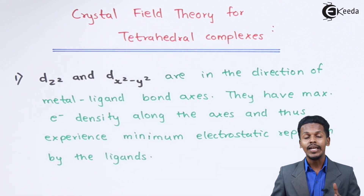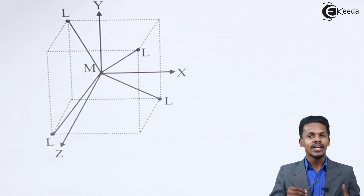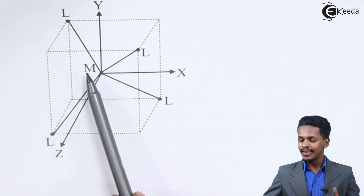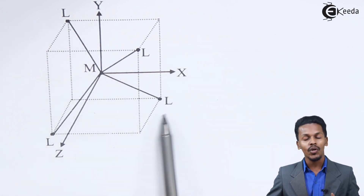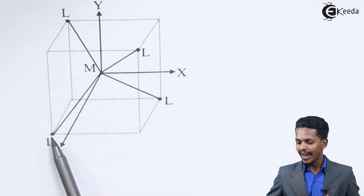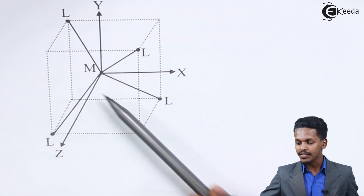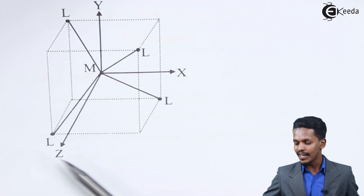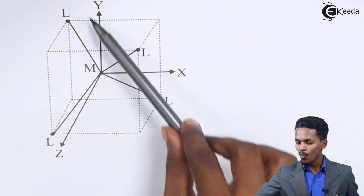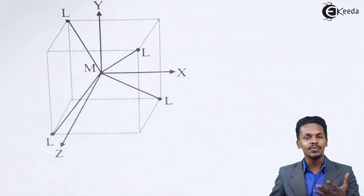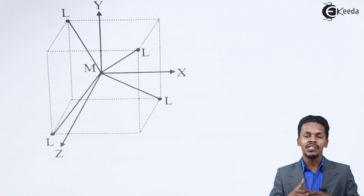To explain this, we have a diagram showing how and where the ligands are located in a tetrahedral complex. The metal is present in the middle, with four ligands approaching between the axes — one between x and z, one between x and y, and one between y and z — so the ligands are approaching between the axes toward the central metal.